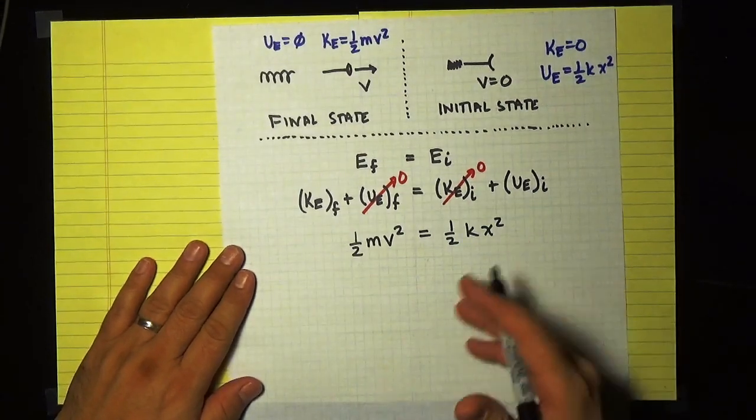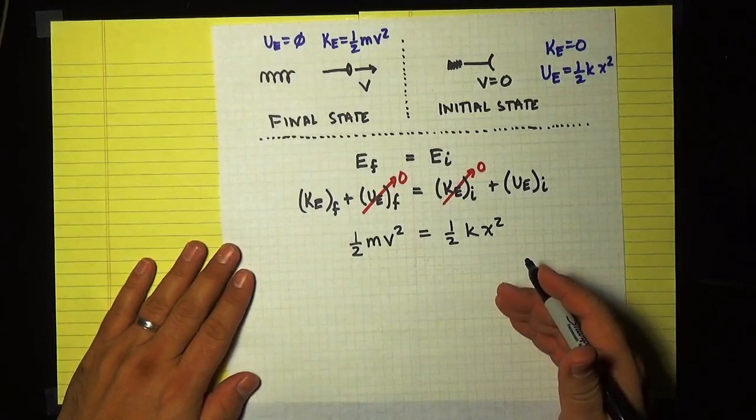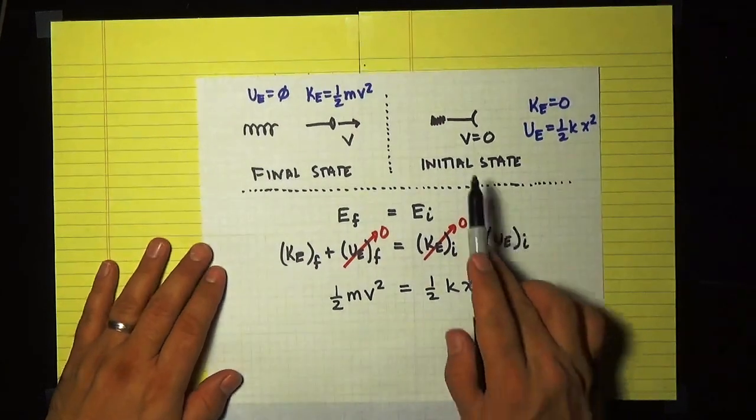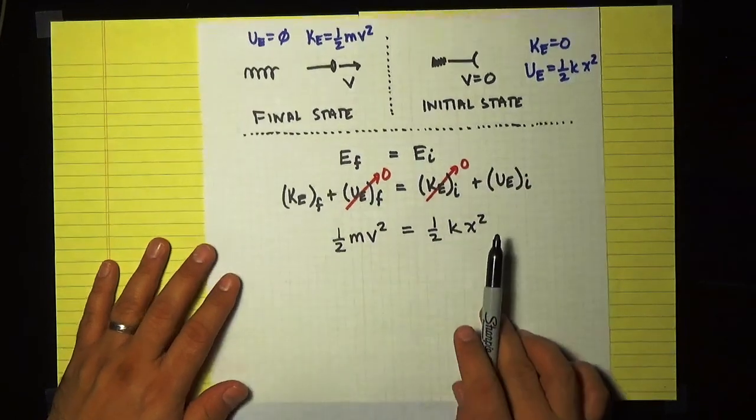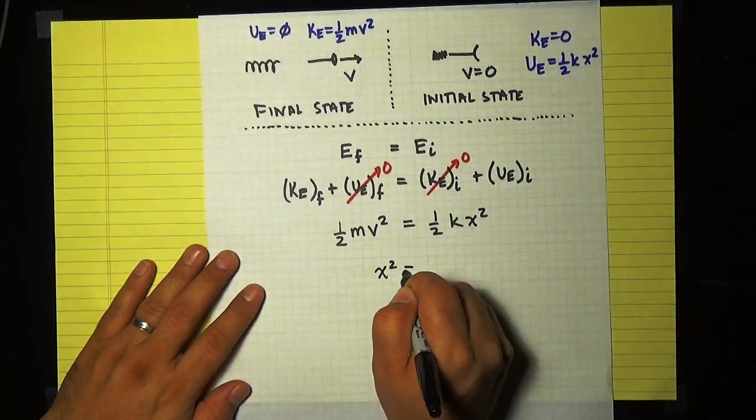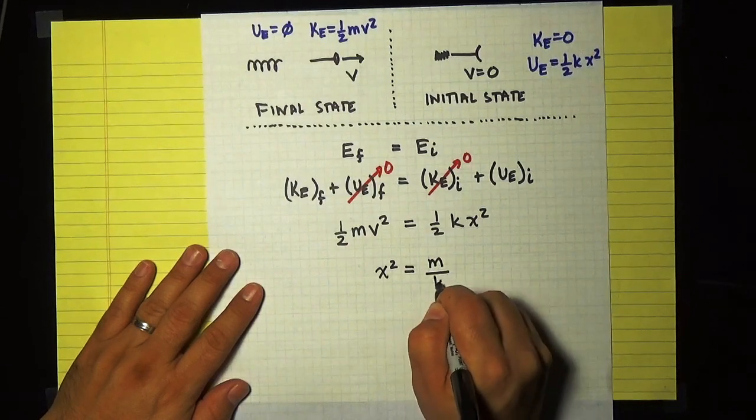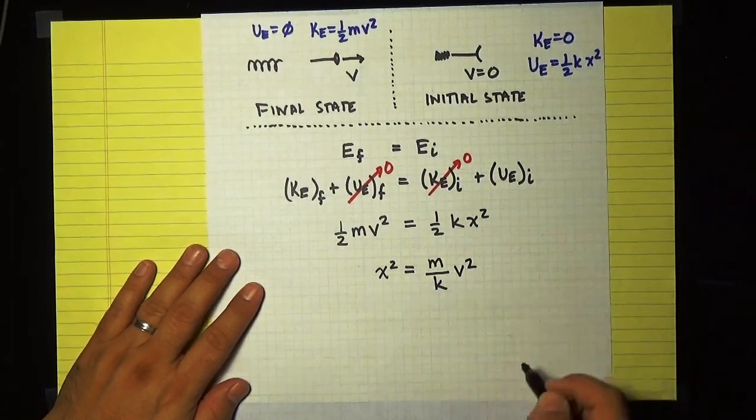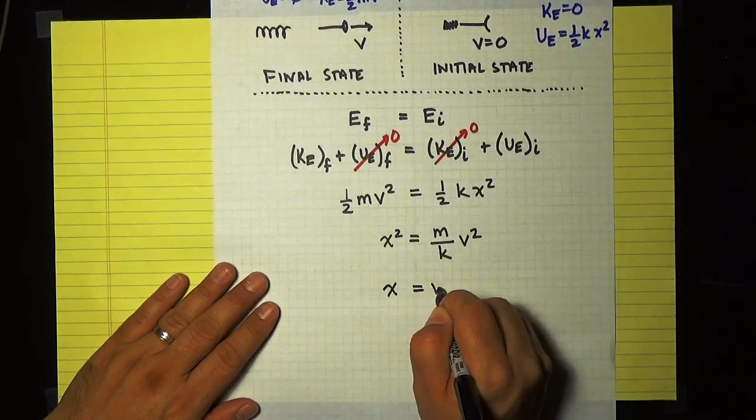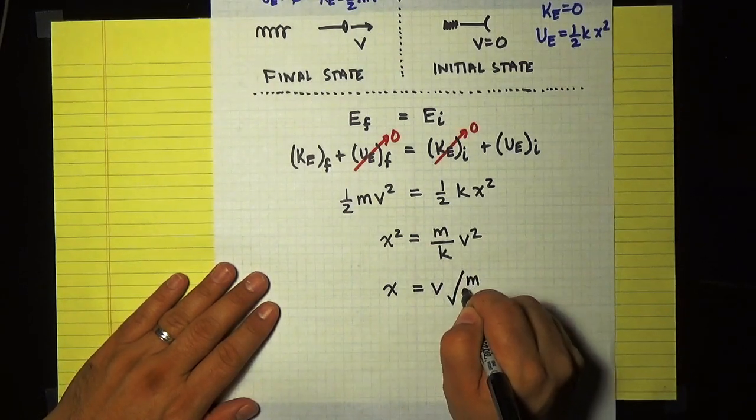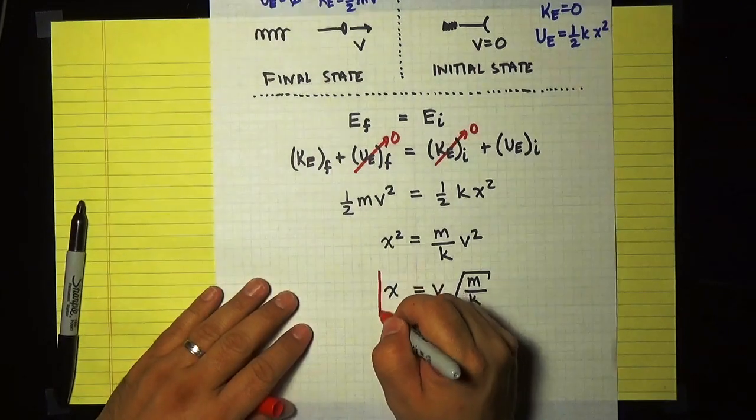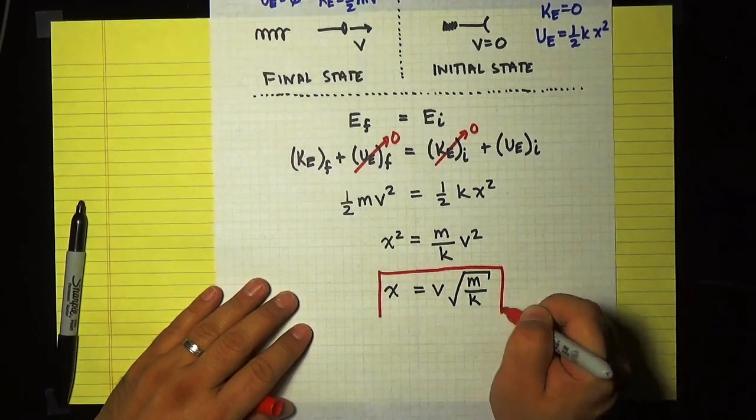Now at this point, I could put some numbers in if I wanted to, but I can solve algebraically for what I'm asked to find. And what we're asked to find is what is the compression of the spring at the moment before the dart is launched. And that is this x here. So I can do a little bit of algebra. The halves cancel out on both sides. So I get x squared is equal to the mass of the dart divided by the spring constant times v squared. And if I take the square root of both sides, I get that x is equal to the final speed v times the square root of the mass divided by the spring constant k. So that is the algebraic expression for the compression of the spring.